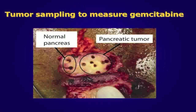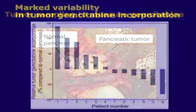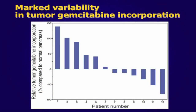For each patient, we immediately sampled the tumor and the normal pancreas so that we could quantify gemcitabine DNA incorporation. Despite well-controlled infusion conditions in the operating room, we saw marked variability in the gemcitabine incorporation in the 12 patients that were recruited to the trial. This ranged from about 135% more delivery in the tumor relative to the normal pancreas for the patient on the left side of the graph, down to 75% less delivery in the tumor relative to the normal pancreas for the patient on the right side of the graph.